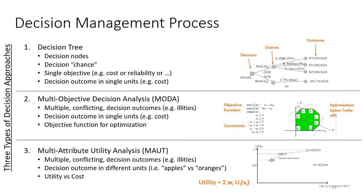System engineers are often faced with situations where the decision outcome is not in a single unit like cost. The third category is multi-attribute utility analysis — the situation where you have to compare apples and oranges, meaning decision outcomes are in different units. This involves multiple conflicting decision outcomes, and the recommended approach is to use a utility function — a weighted sum of values for each attribute of your decision. Typically you calculate the utility for each alternative and plot it on a utility versus life cycle cost chart, allowing you to see the value of utility versus cost for each design alternative.